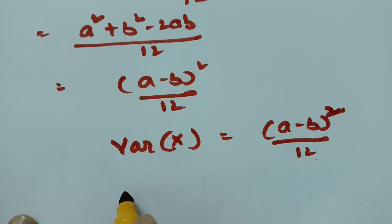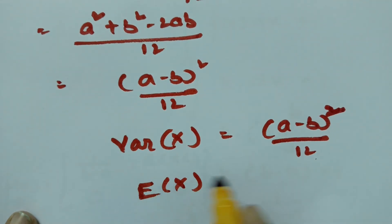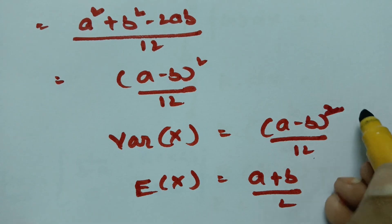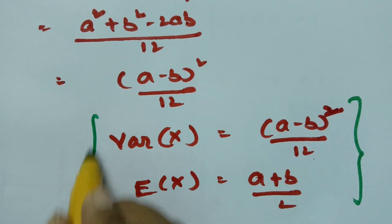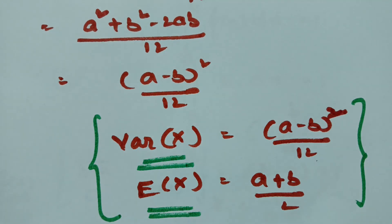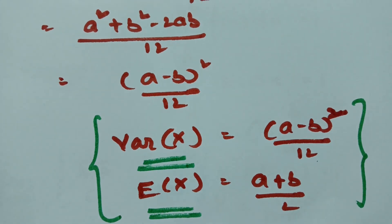Therefore the mean of the uniform distribution is (a + b)/2 and the variance is (a minus b) squared over 12, equivalently (b minus a) squared over 12. This is how to find the mean and variance of the uniform distribution, and these results are used to solve many problems. I will be uploading more problems related to uniform distribution — please practice and share with your friends. Thank you for watching.